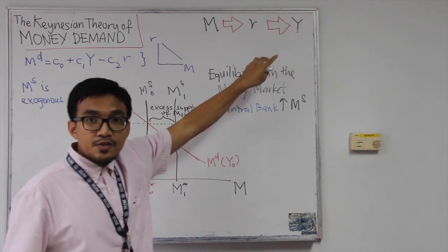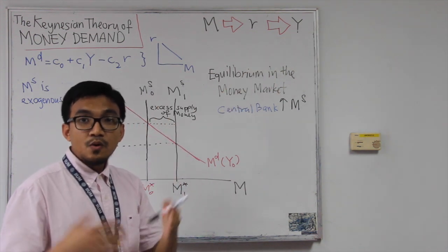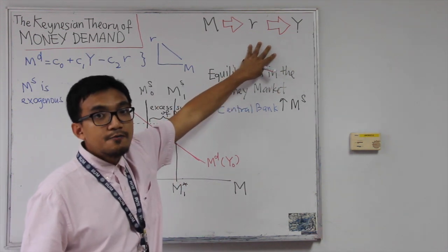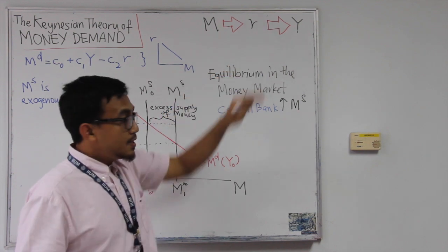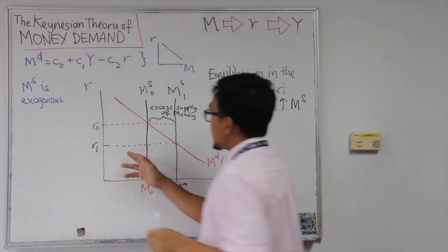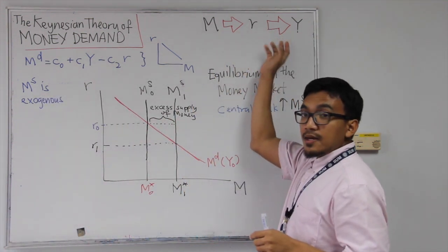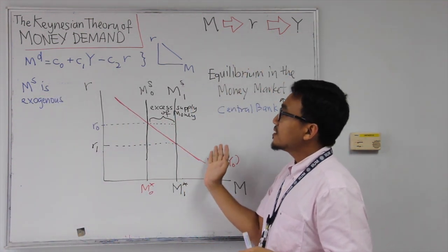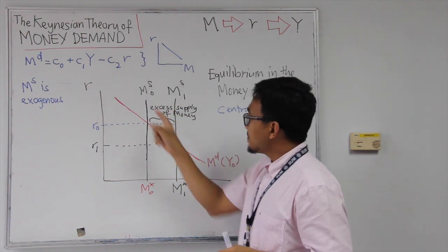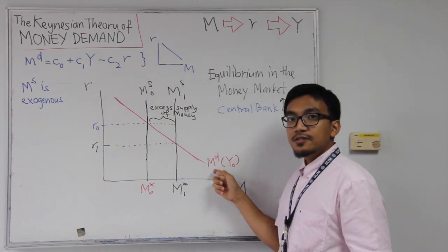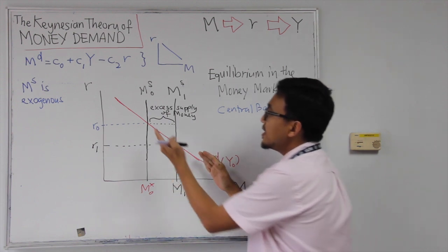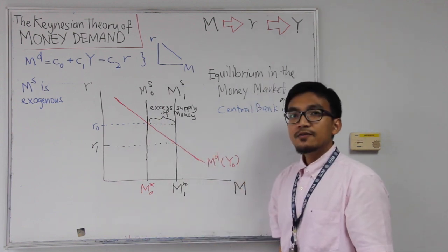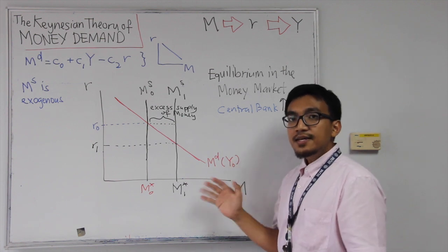One of the components of aggregate demand investment will then go up. So lower interest rate will then translate into higher income. And the problem here now become complicated because income now is in the function, in the money demand function. So when Y goes up, then the demand for money will also have to go up. So the story doesn't end here.